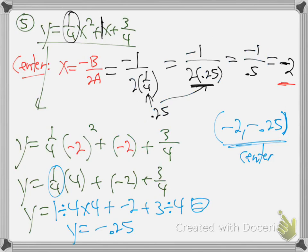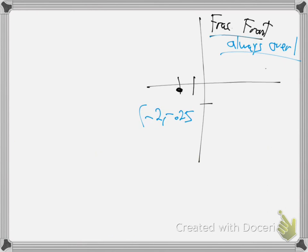So negative 1 right here and negative 3 right there. And so the U shape must go like this. See how I never had to worry about the rise over run? I had the center dot at negative 2, negative 0.25 right there, and then I just found the two x-intercepts. So use one of those as your other dot - you know what the U shape looks like. I never needed the rise over run thing.